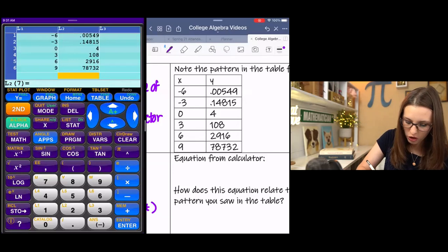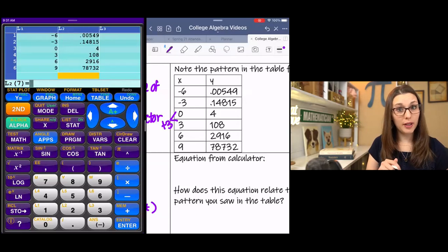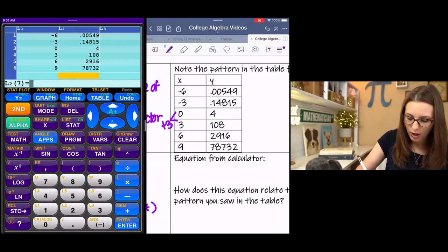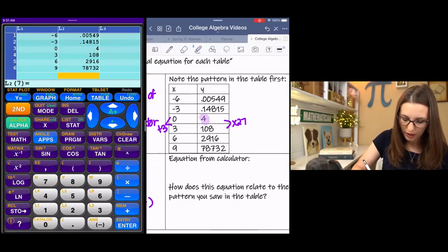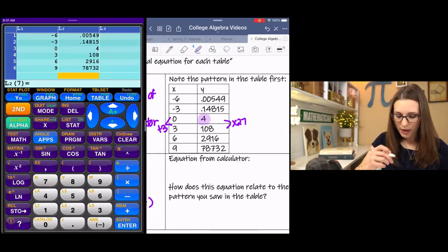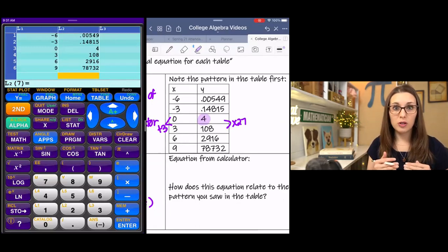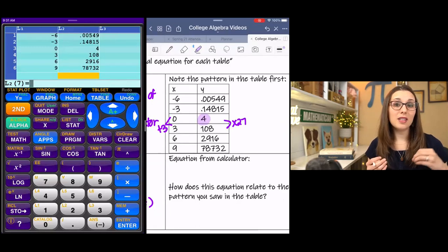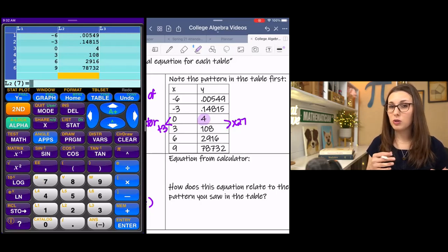So if we're looking at the table of values, I can see that the change in x is going by 3's instead of 1's. So that's going to play into my change factor. And this is being multiplied by 27. My initial value is 4. So let's make a hypothesis really quick. If the change factor over 3 values is 27, in the previous example, we used the square root because we went by 2's. So what do you think we're going to use instead if we're going by 3's in the x value?